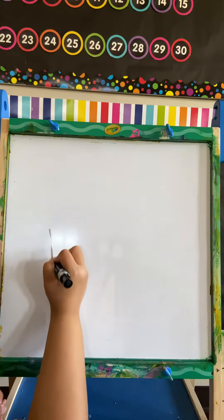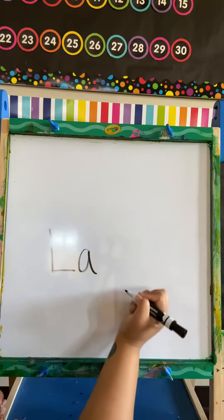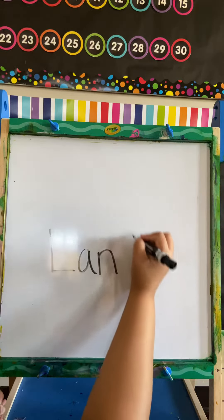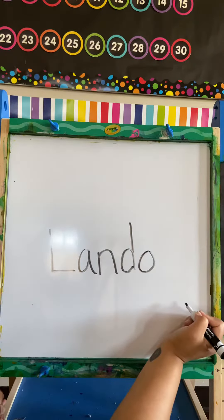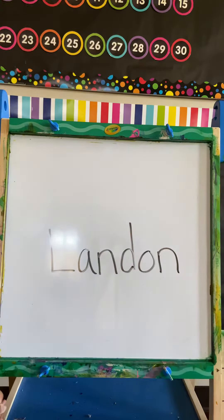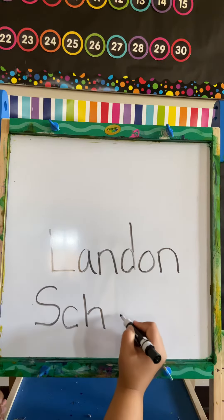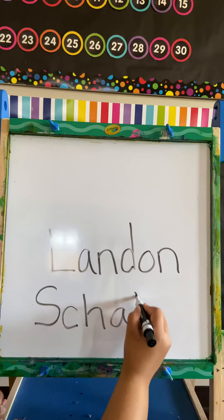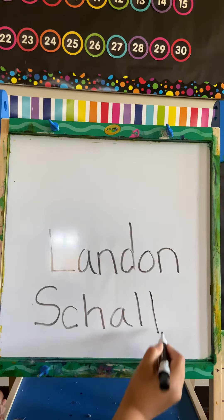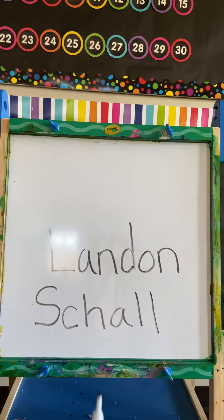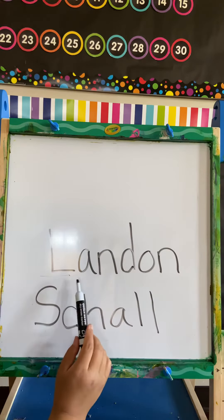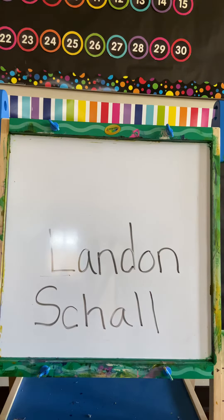Your first name is Landon: L-a-n-d-o-n. And your last name is Schall: S-c-h-a-l-l. So let's spell it — Landon: uppercase L, lowercase a-n-d-o-n. And Schall: uppercase S, lowercase c-h-a-l-l.